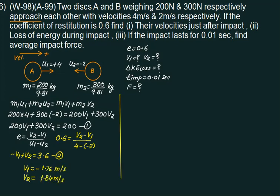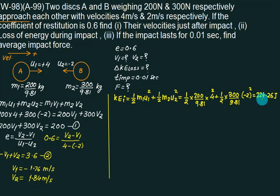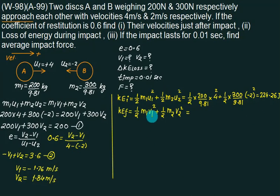Initial kinetic energy is given by half M1 U1 square plus half M2 U2 square, equal to 1 by 2, M1 is 200 by 9.81, initial velocity is U1 is 4 square plus 1 by 2, mass is 300 divided by 9.81, this velocity is minus 2 square. Solve this equation and check your initial energy, 224.26. Only difference is that you have to replace for V1 and V2, 1.76 and 1.84. And confirm this answer 83.34. And check your loss is initial minus final, approximately 140.92 joules.